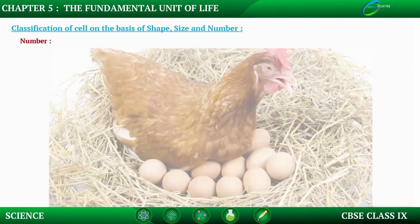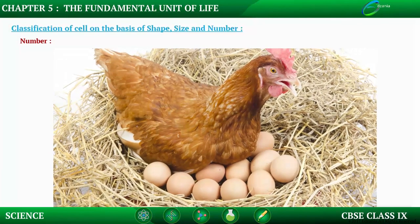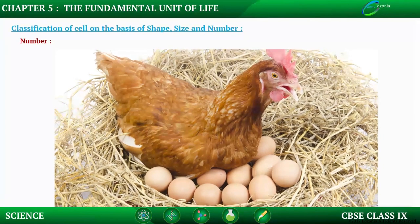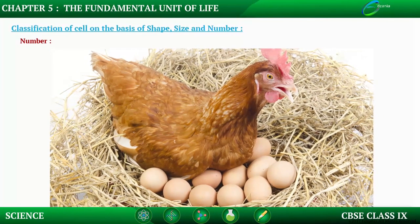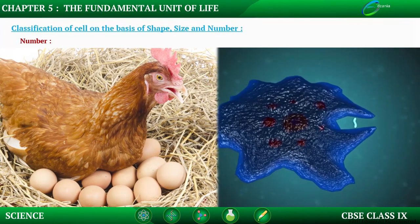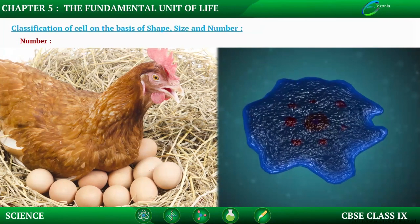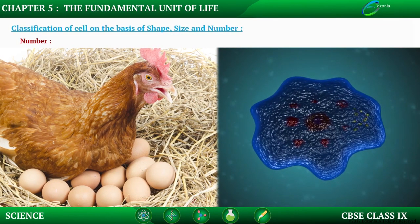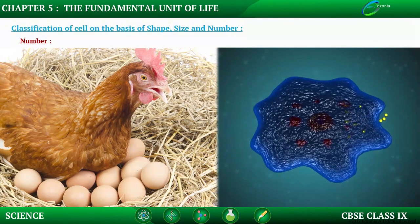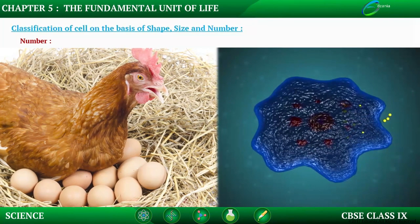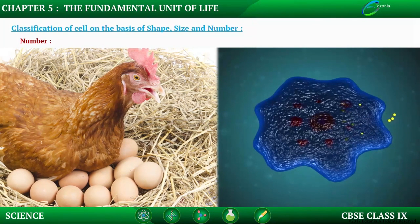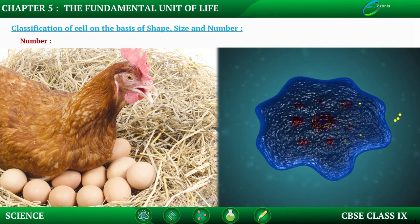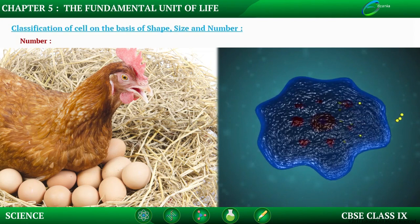Each multicellular organism starts its life as a single cell — a fertilized egg. The fertilized egg cell then multiplies and the number of cells increases, forming a multicellular organism with billions of cells. Unicellular organisms can capture and digest food, excrete, grow, and reproduce — performing all necessary life functions. Multicellular organisms carry out specialized functions with the help of groups of specialized cells called tissues, which form organs and organ systems.